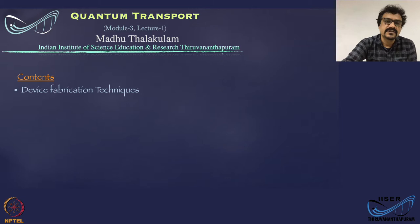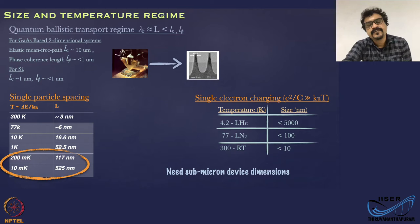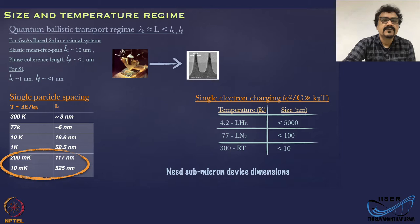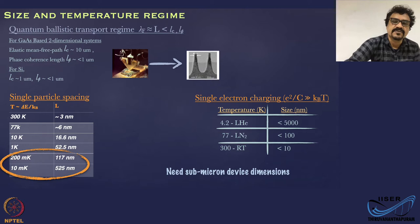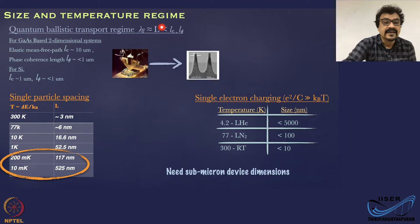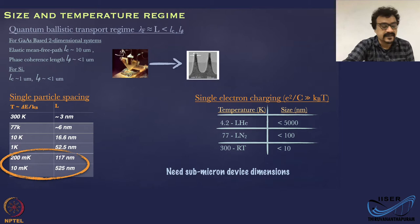In this lecture, we will overview the device fabrication techniques. We learned in a previous class that quantum transport, especially quantum ballistic transport, happens at length scales where the dimension of the device is less than the scattering length or the phase relaxation length.